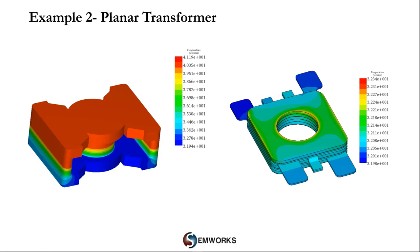The magnetic simulation is now coupled to thermal analysis to compute the steady-state temperature at different parts of the transformer. On the left we can see the steady-state temperature of the ferrite core, which reaches a maximum of 41 degrees Celsius, while the windings and insulation layers have a maximum temperature of 32 degrees Celsius.